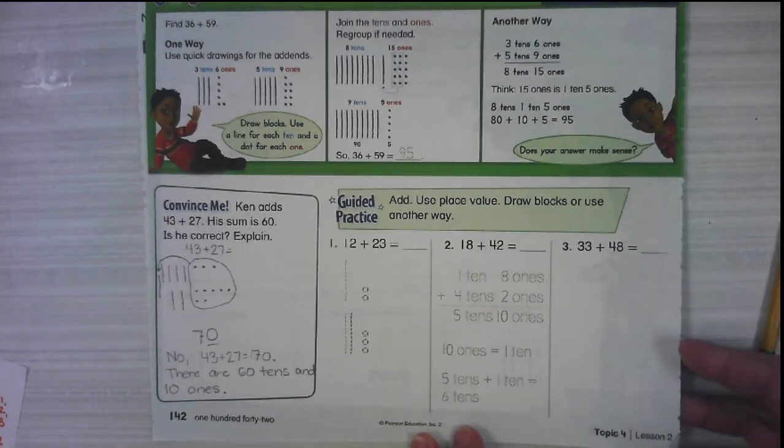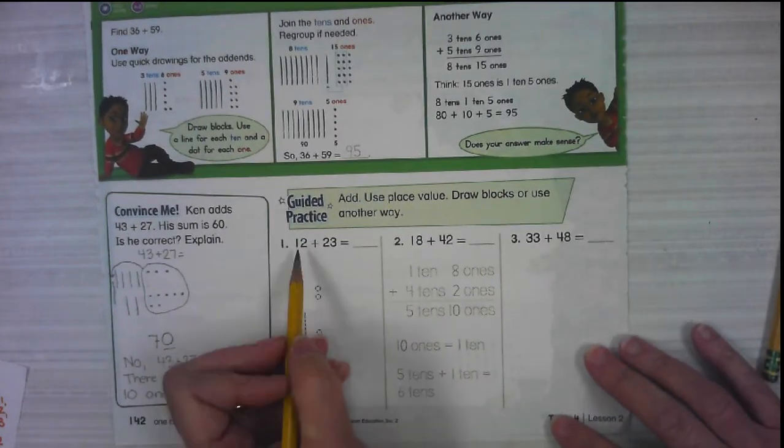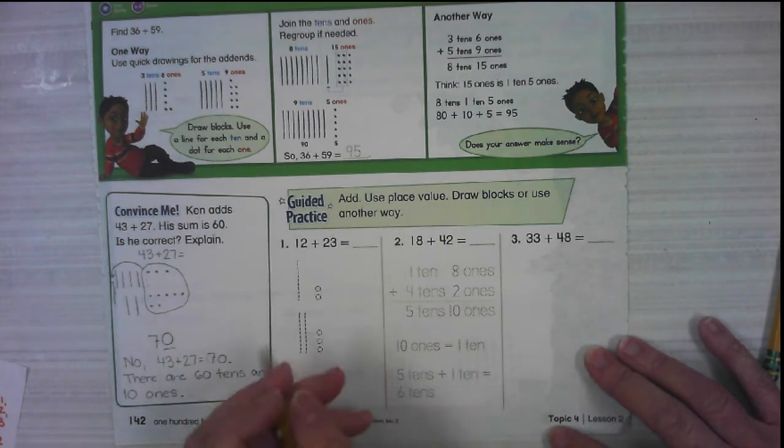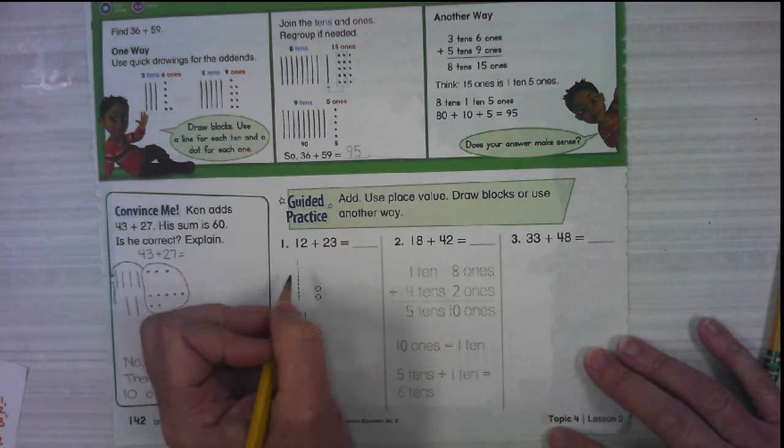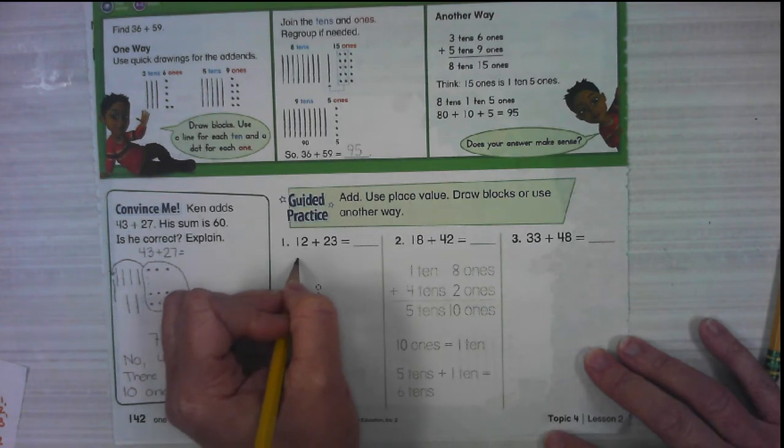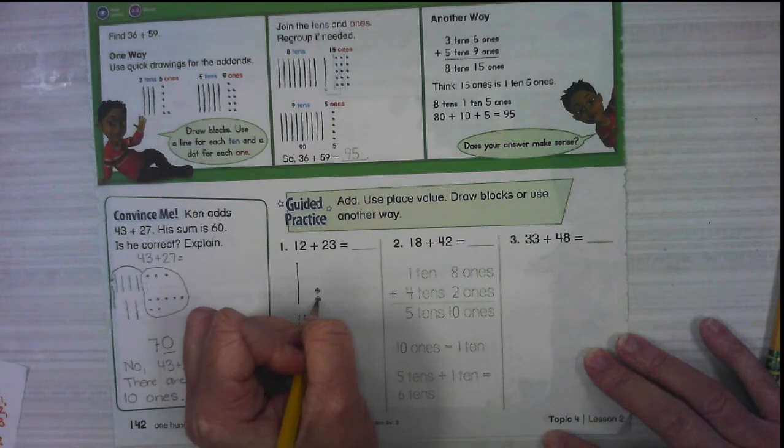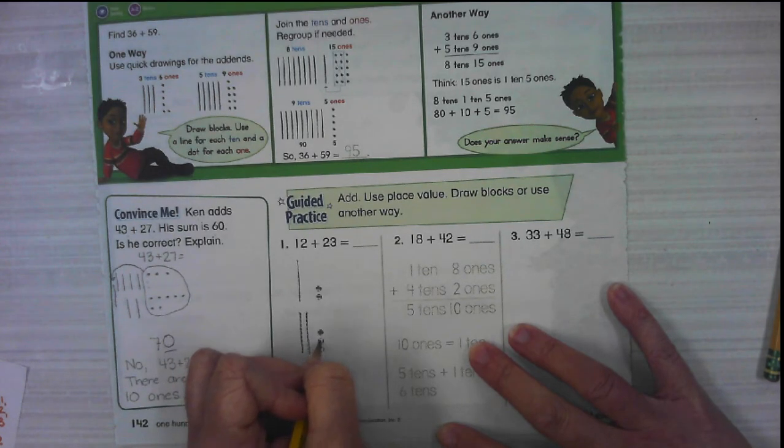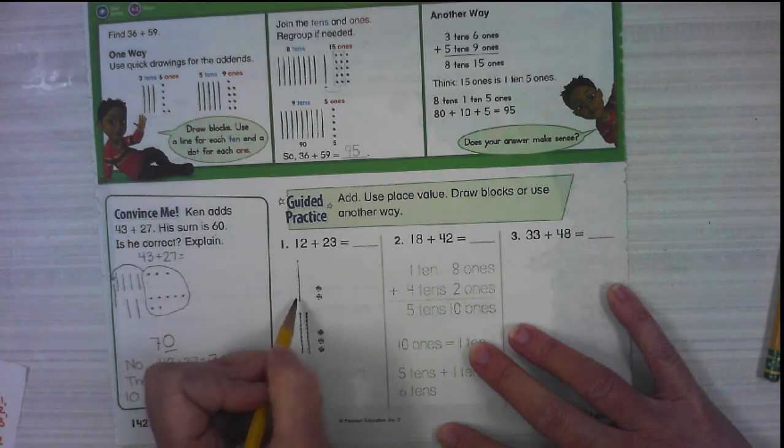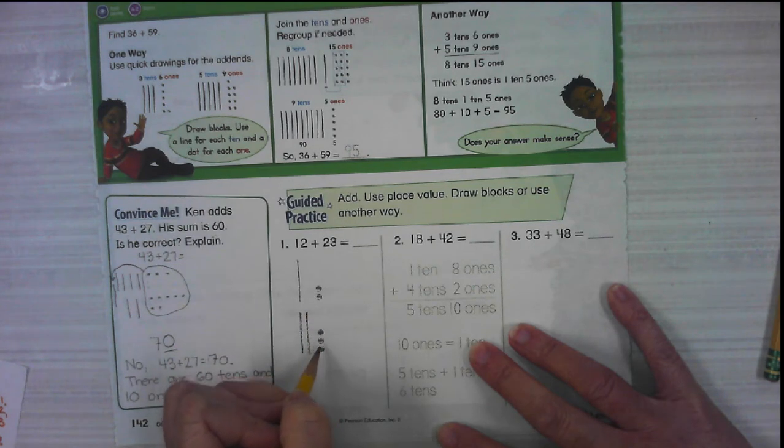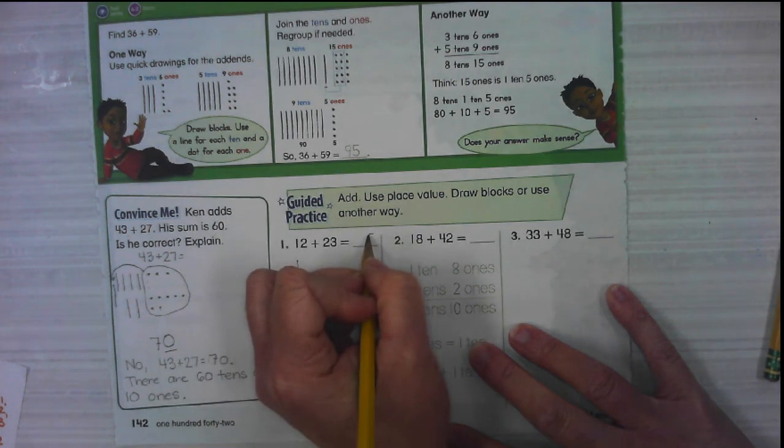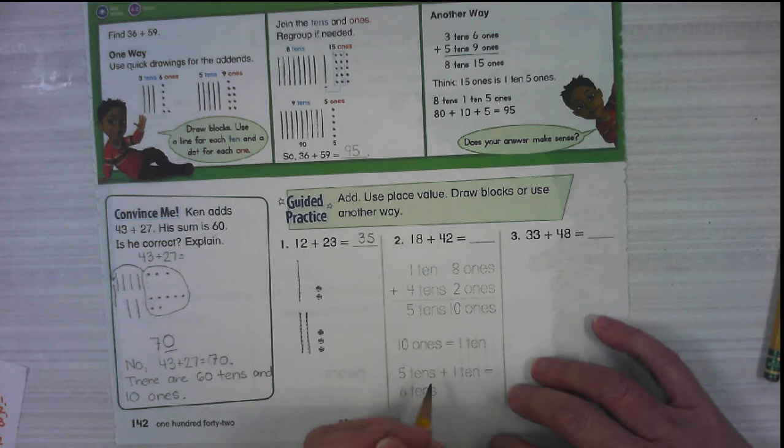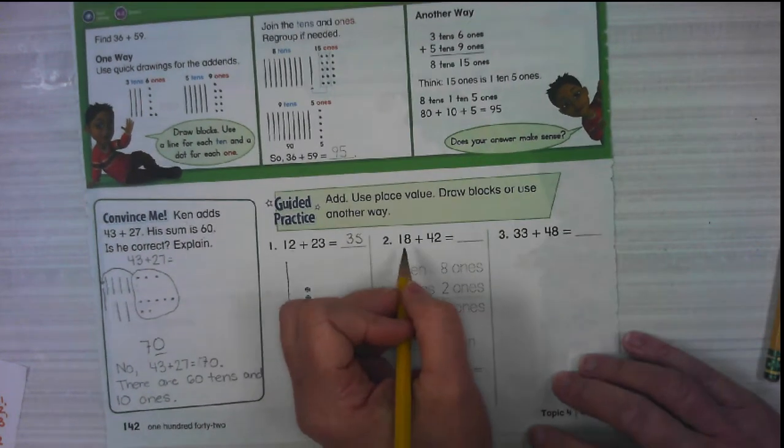We're going to go through some practice together and then I will set you free. It says add using place value blocks and draw the blocks or use another way. We're going to trace over 12 plus 23. We're going to do a 10 and two ones for 12 and two tens and three ones. So all together we have five in the ones place, 10, 20, 30. So a three in the tens place. We didn't have to regroup anything. So that wasn't too bad.